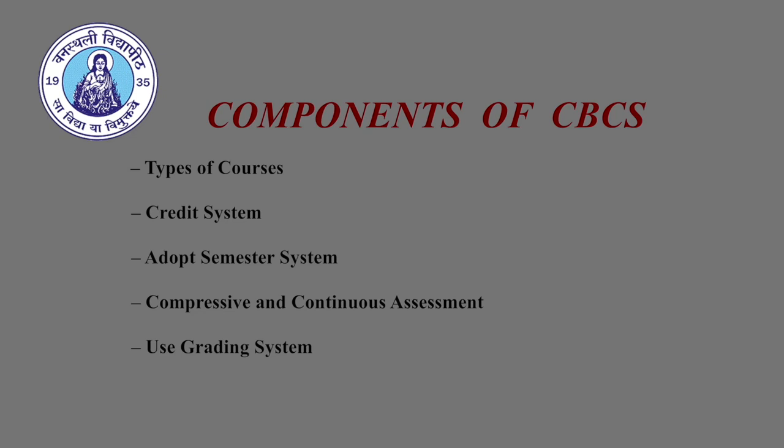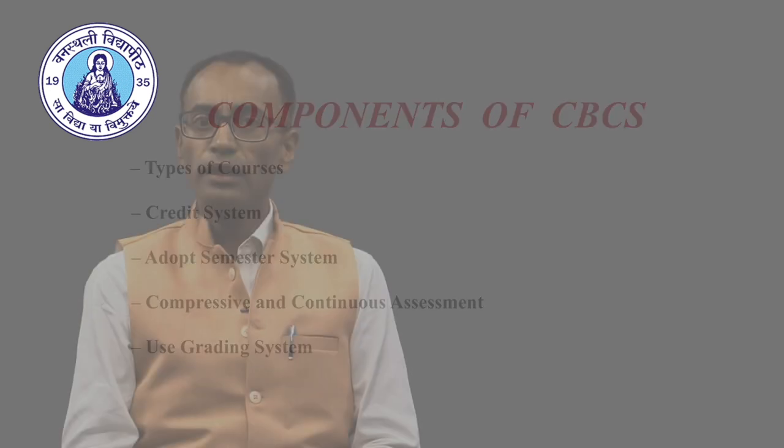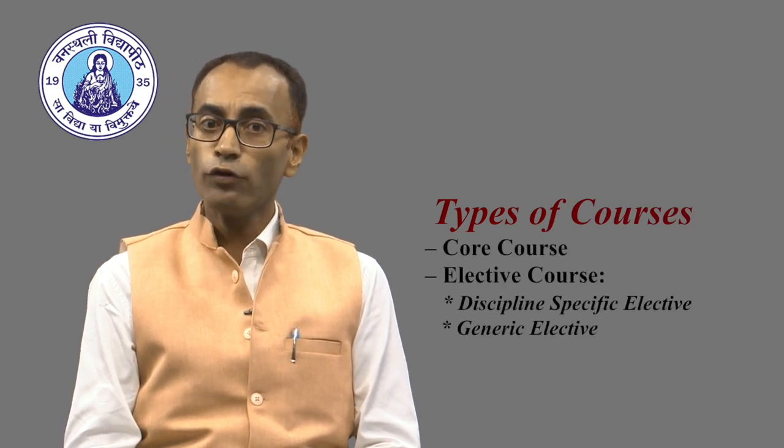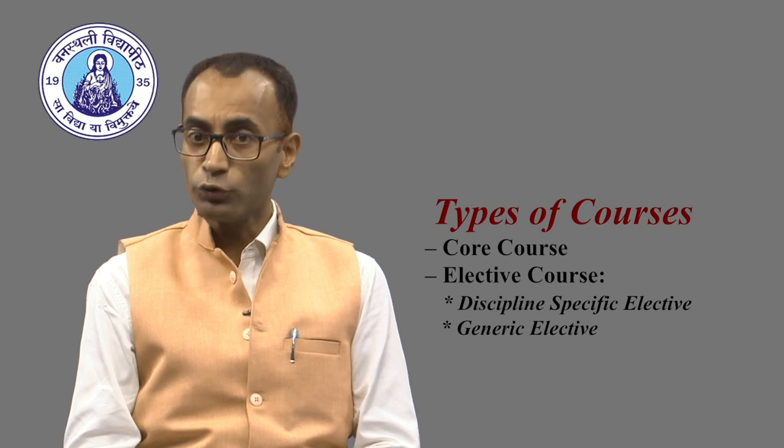Now let me discuss the important components of CBCS and ways to implement them. The components on which CBCS is based are: types of courses, credit system, semester system, comprehensive and continuous assessment, and grading system. Let me explain the types of courses first. Although there are various types of classification of courses, here I will focus on only those which are widely used and discussed. First is the core course — a course which is to be compulsorily studied by a student to complete the requirement of a program in a set discipline of study.